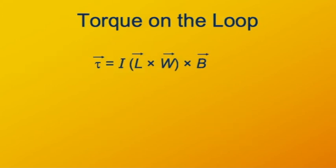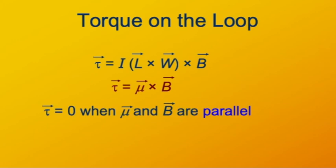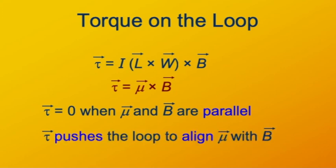Recall that the formula for torque was I times L cross W cross B — I times the area vector times the magnetic field vector. I times the area vector is the magnetic dipole moment of the loop. So torque equals vector mu cross B. Because of the nature of the cross product, when mu and B are parallel or anti-parallel, the torque will be zero. The torque will be maximal when mu is perpendicular to B. The torque is always going to push the loop — torque the loop — in the direction of aligning it with field B.